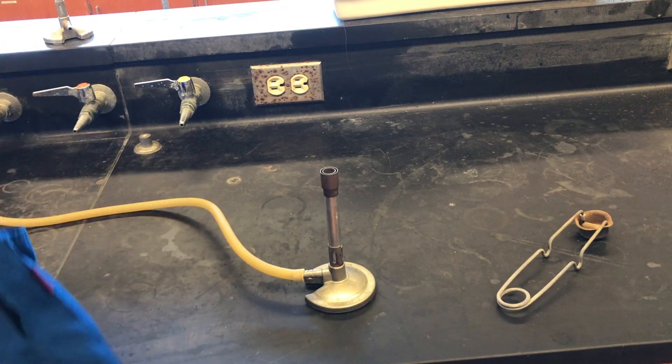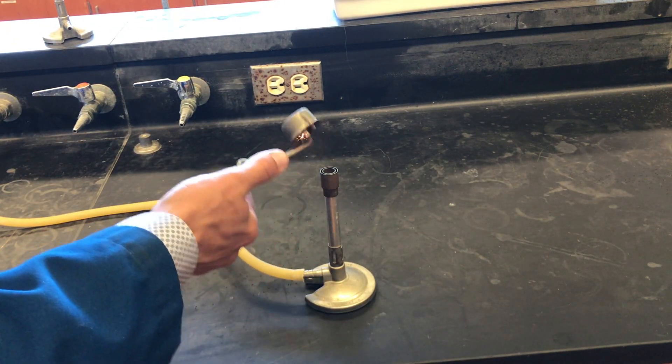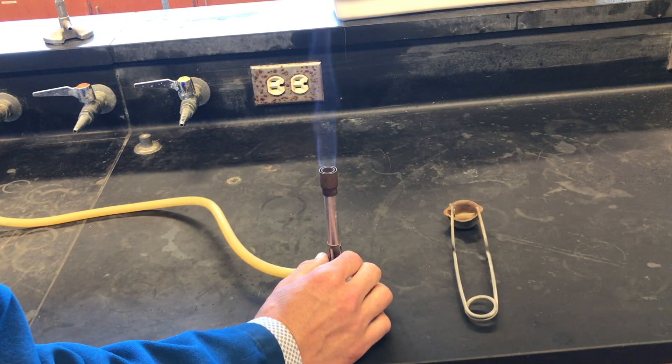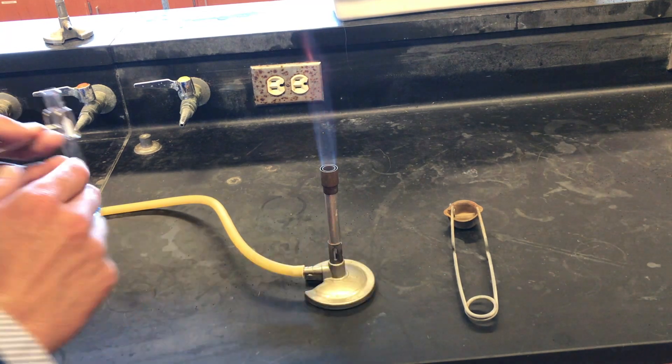To light the Bunsen burner, we'll close the oxygen valve at the bottom and turn on the natural gas. Use the striker to light the Bunsen burner and then carefully open the oxygen valve until we have a blue cone of flame with no orange in it.